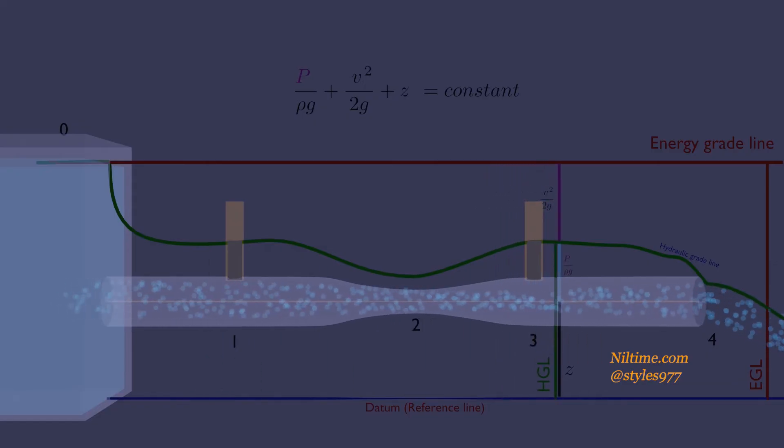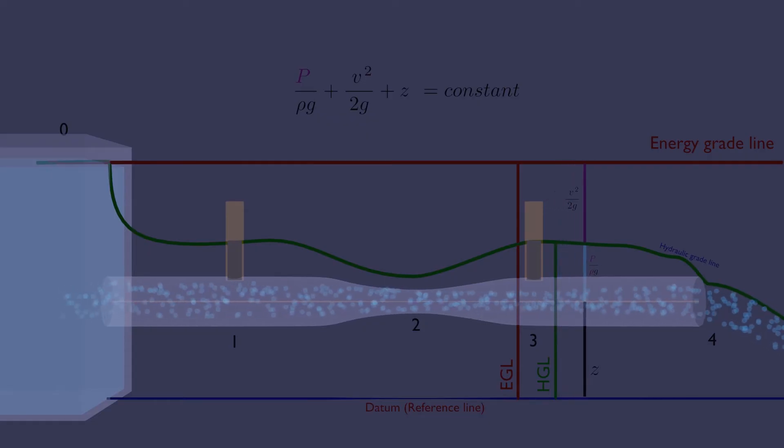You can imagine HGL as the potential energy. The sum of potential and kinetic energy is the total energy, or EGL. HGL decays to the liquid surface at the outlet since the pressure there is atmospheric and the pressure head is zero.